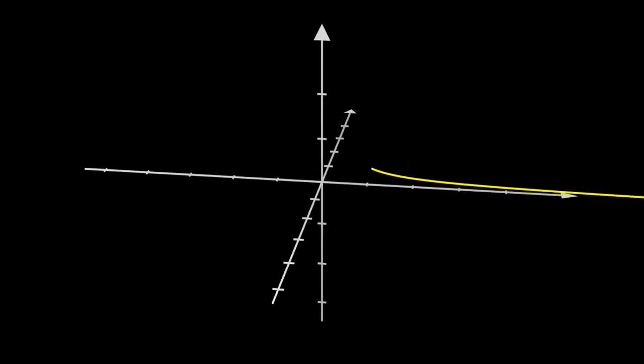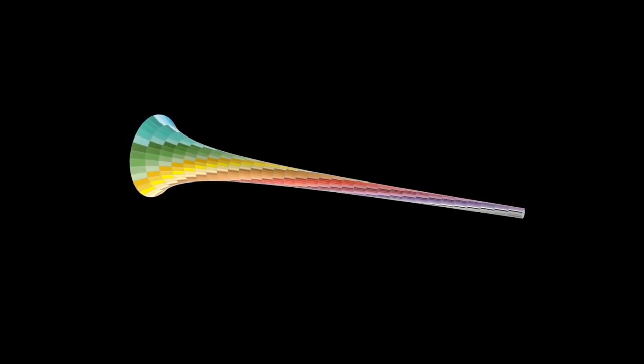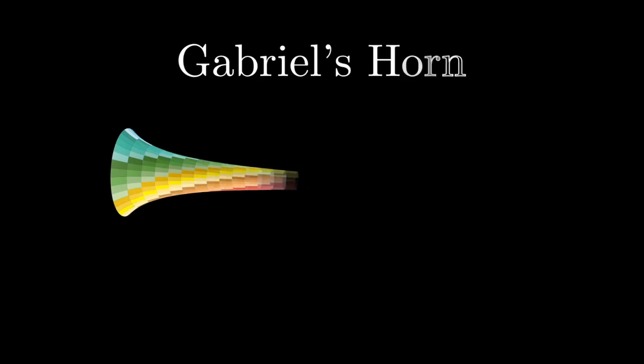Torricelli thought of the surface that would be formed after you rotate the function around the x-axis. Now if you've taken a calculus course before, you've probably heard of solids of revolution. This is basically what we're doing here. The name of the surface is called Gabriel's horn.